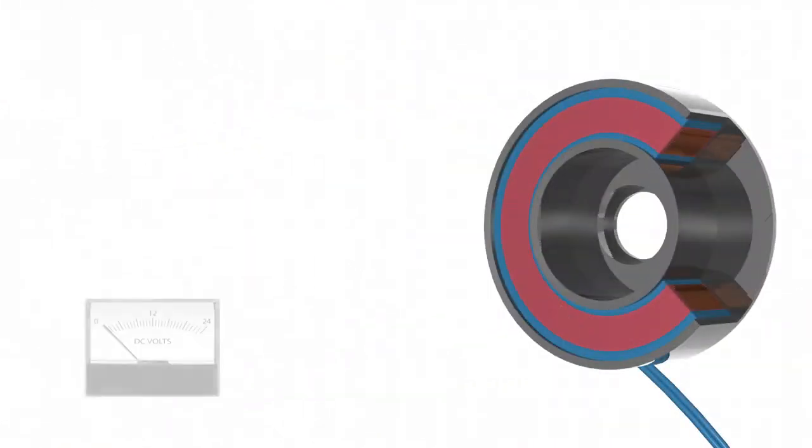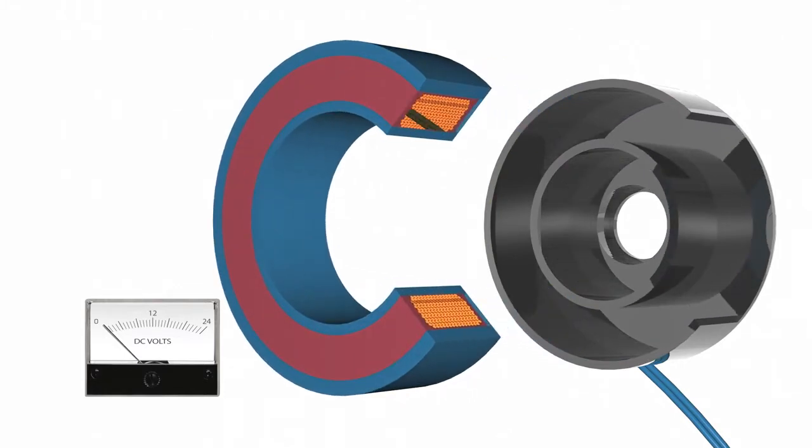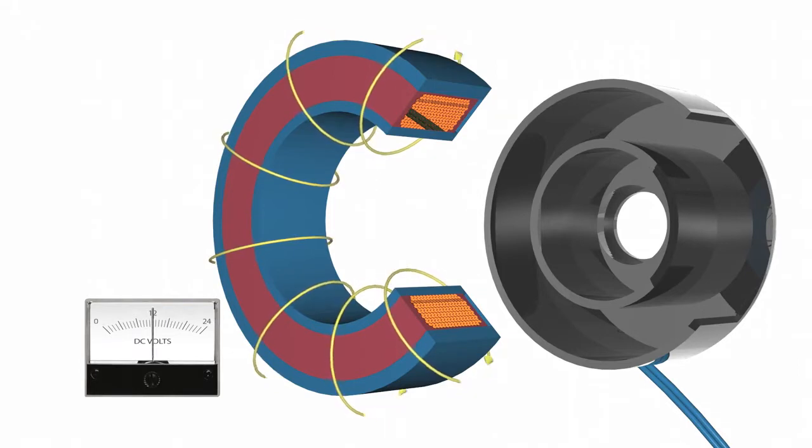Electromagnetic PTO clutch brakes operate via electric actuation but transmit torque mechanically. The clutch brake consists of an electric clutch and a mechanical brake.